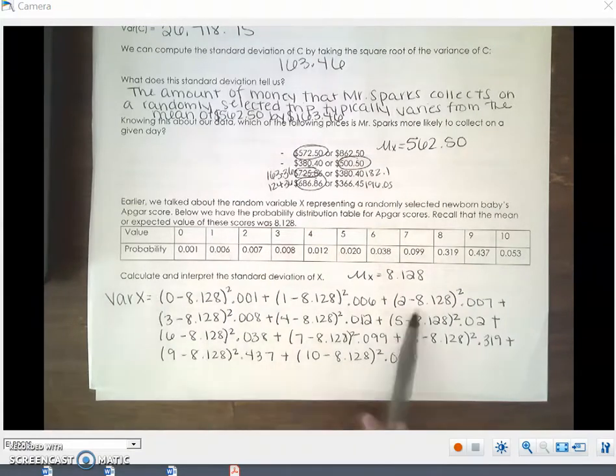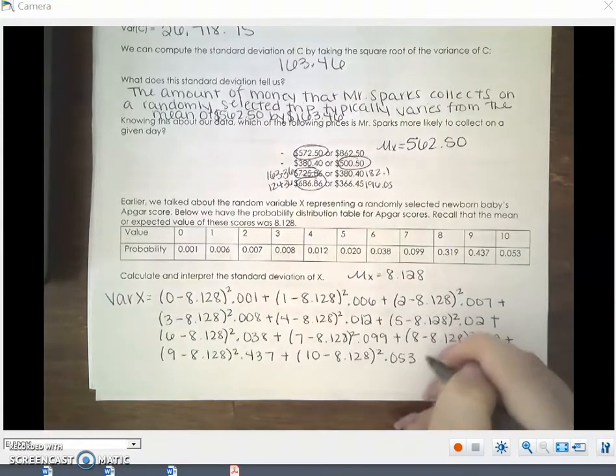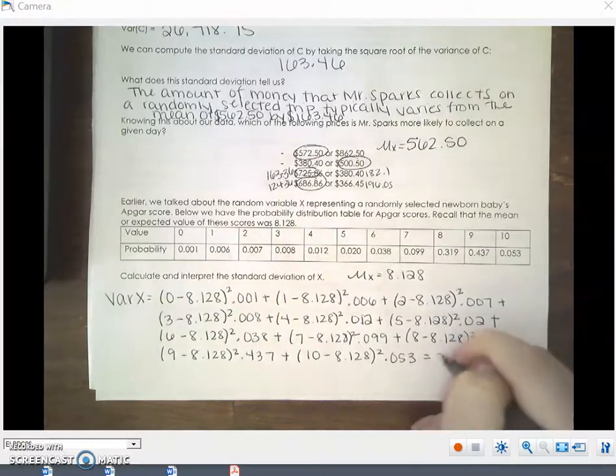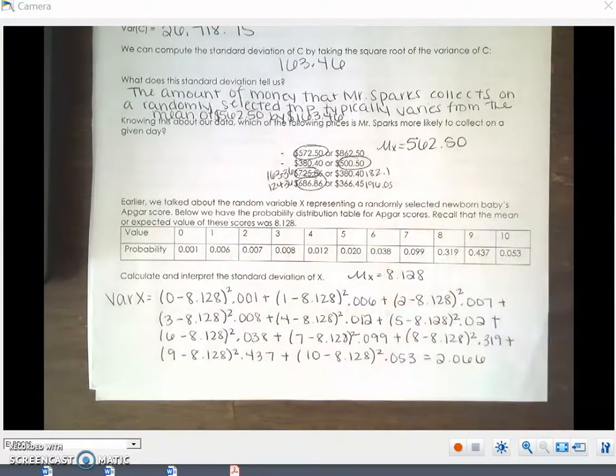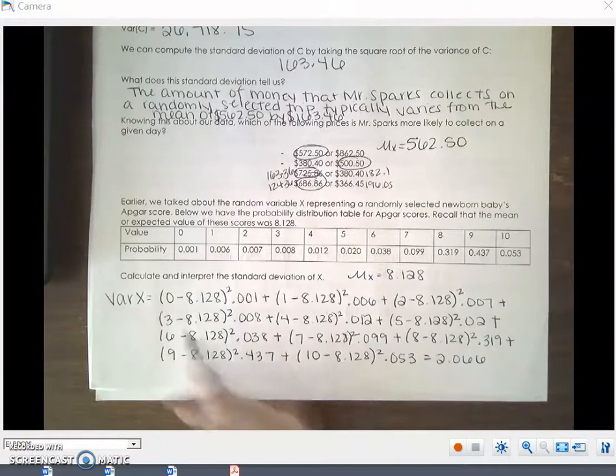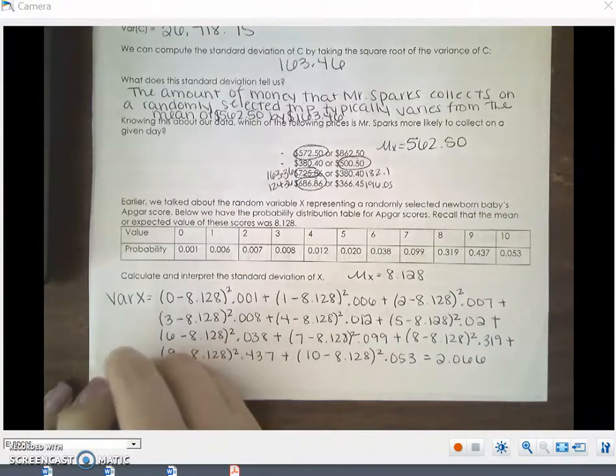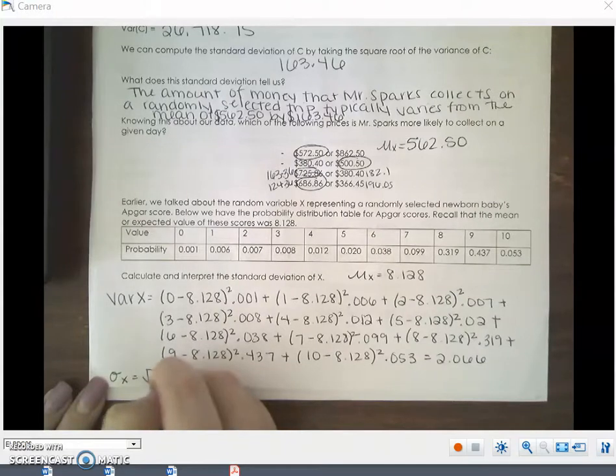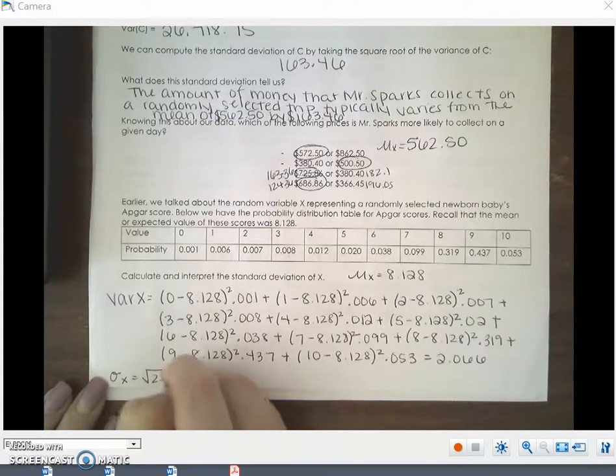So when I type this all into my calculator, I got the variance of x is 2.066. Now to get the standard deviation, the standard deviation of x is equal to the square root of 2.066, which equals 1.437.